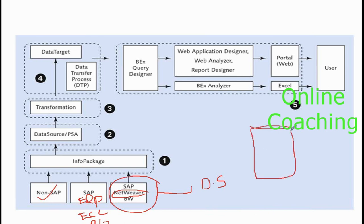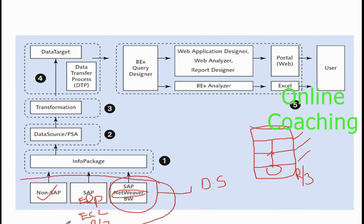From these places we get data into our BW system. We're going to learn everything step by step: how to create each object, why to create it, what are the steps, when to create it, what happens after creation, how the data moves, and where you can see the data at each layer. These are all the things we're going to learn from the beginning.